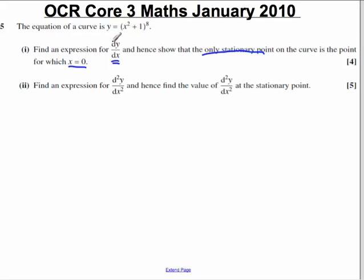To find dy by dx, if you've got y equals x squared plus 1 to the 8, it's asking you to differentiate this function with respect to x. It then tells you you've got a stationary point.